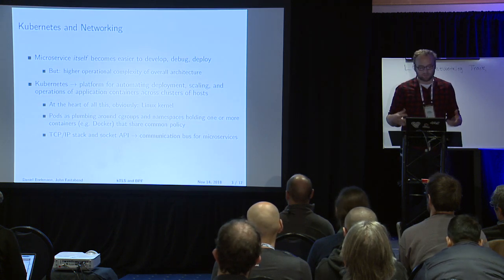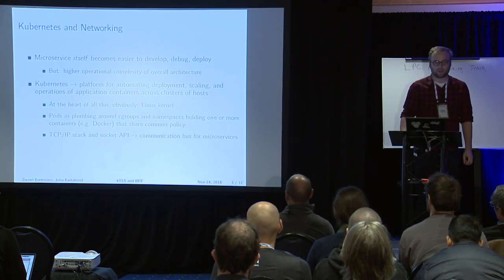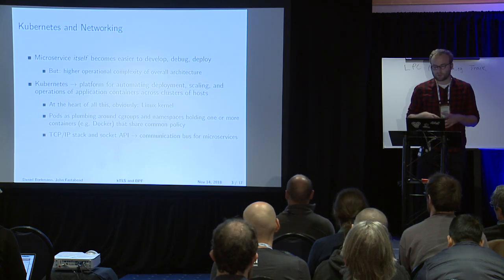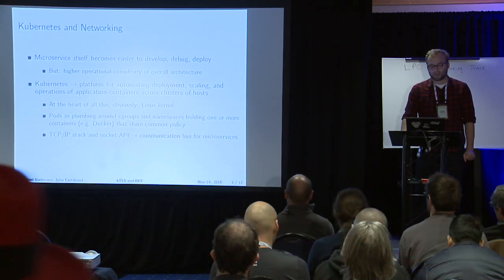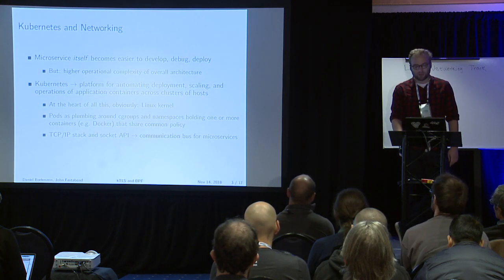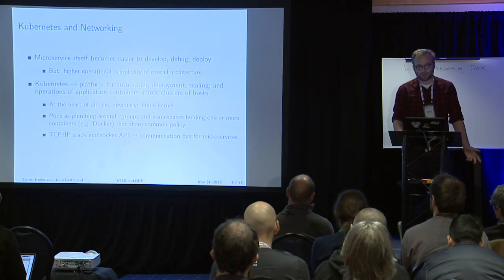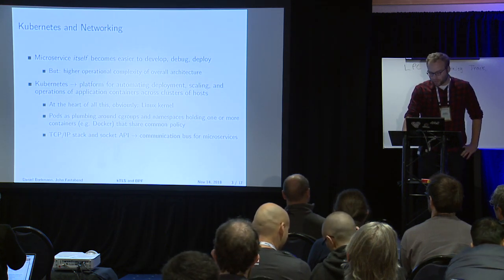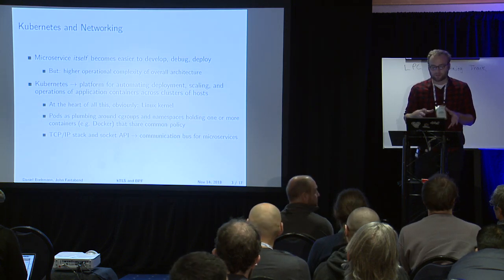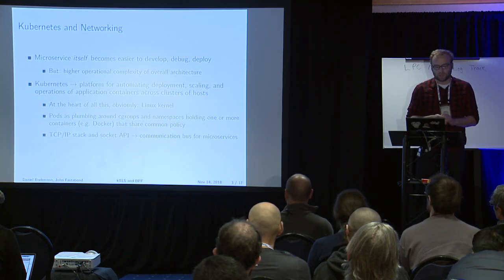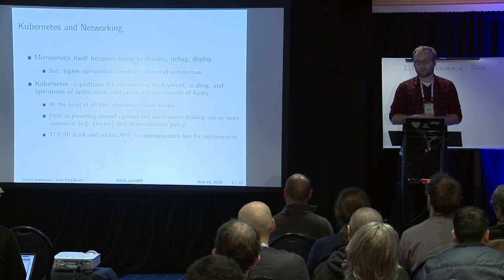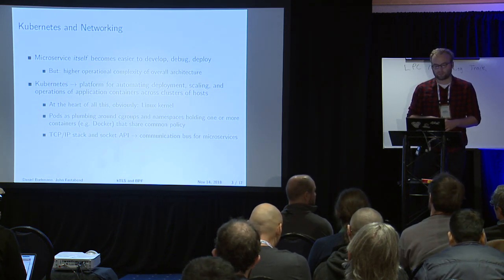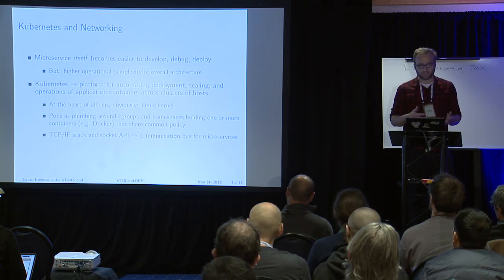The big challenge is that you have higher operational complexity because you need to take care of all the security policies, load balancing, scaling policies, and all of that. There's a platform that helps in deploying, scaling, and operating all of this, which is called Kubernetes. At the heart of all of this is, of course, the Linux kernel. In Kubernetes, you have entities called pods — basically a combination of cgroups and namespaces that can contain one or multiple containers, sharing a common policy such as a security policy or a rollout policy.